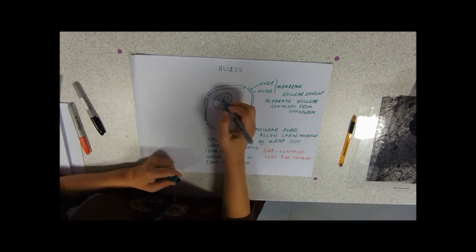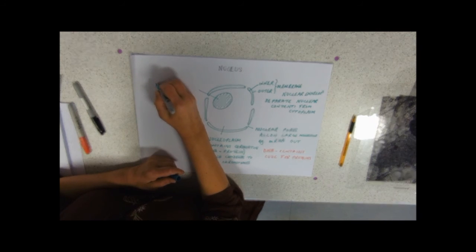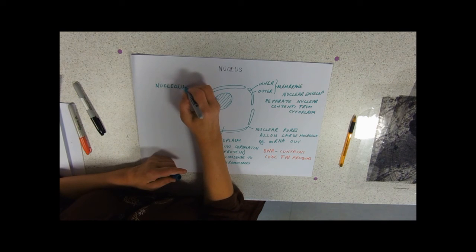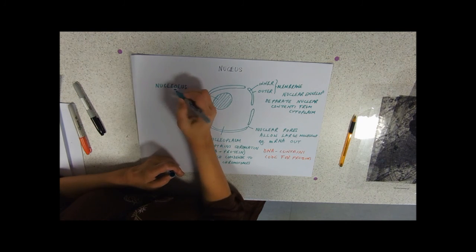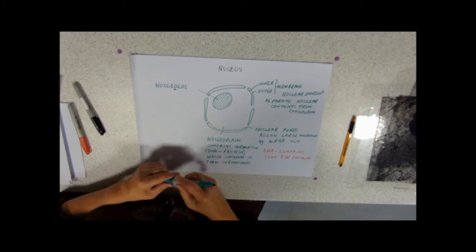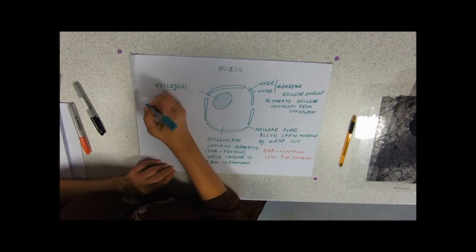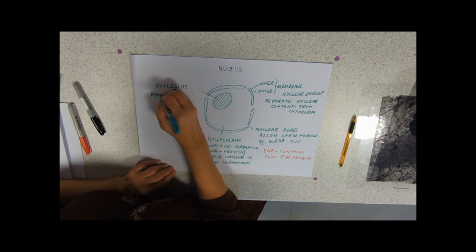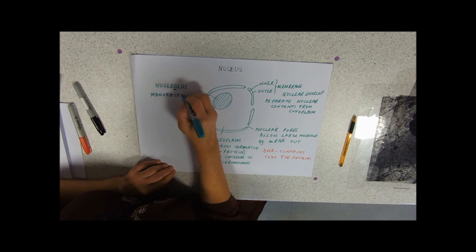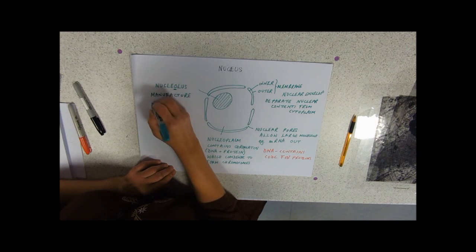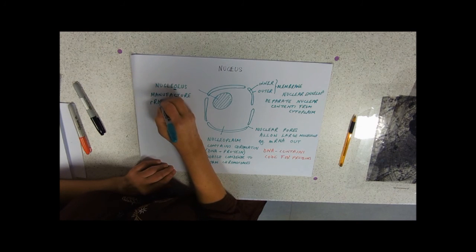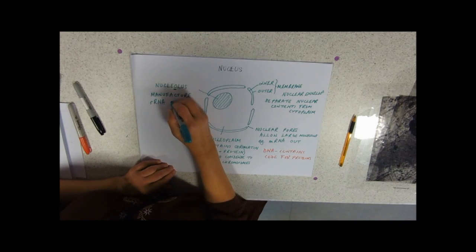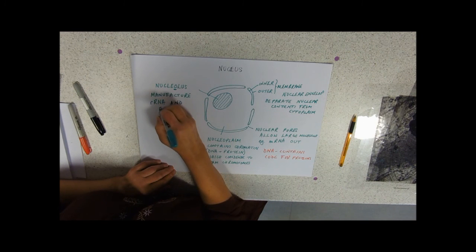And last but not least we come to the nucleolus. Remembering that we have to be able to spell this—so this is N-U-C-L-E-O-L-U-S. Really, you've got to remember to put the O in that. And the nucleolus, its role is to manufacture a different sort of RNA called rRNA, and again later on in the course we'll do what that stands for, and ribosomes.